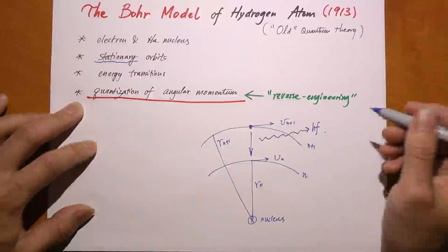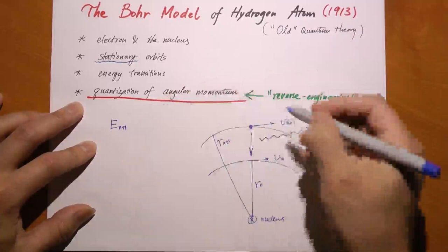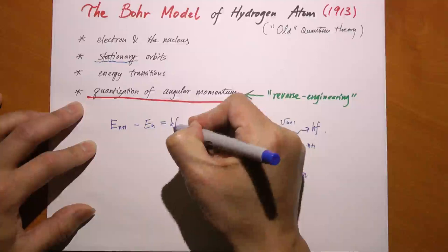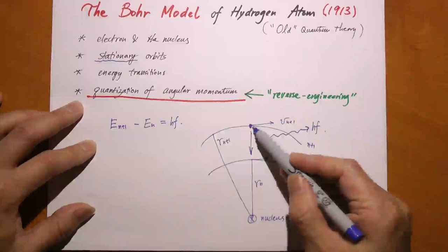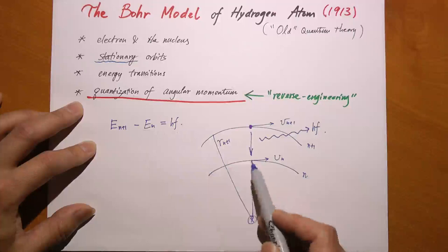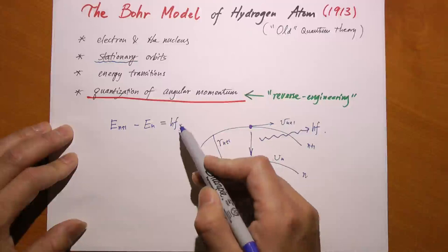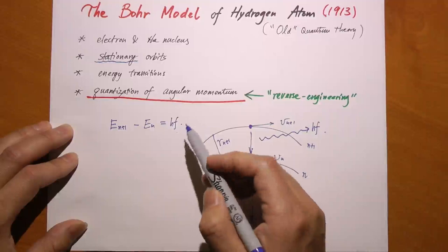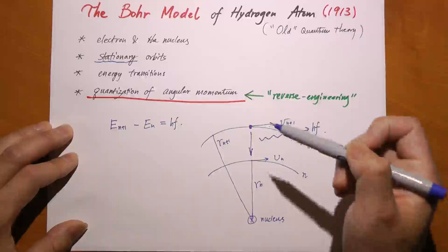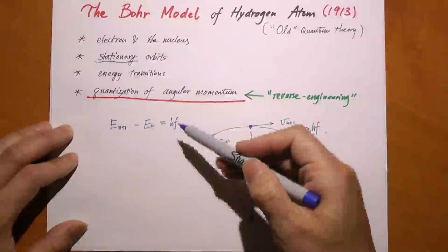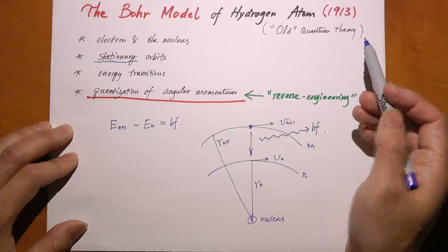Therefore, we can write E at n plus 1 minus E at n equals hf. That tells you the frequency of the light coming from this transition of electronic orbitals. The electron doesn't have to jump to its immediate neighbor—it can go from n equal to 5 to n equal to 2, for example. The energy of the photon equals h times f, which comes from Planck's hypothesis. The Bohr model incorporated the quantum hypothesis of photon energy and the Rutherford experiment.